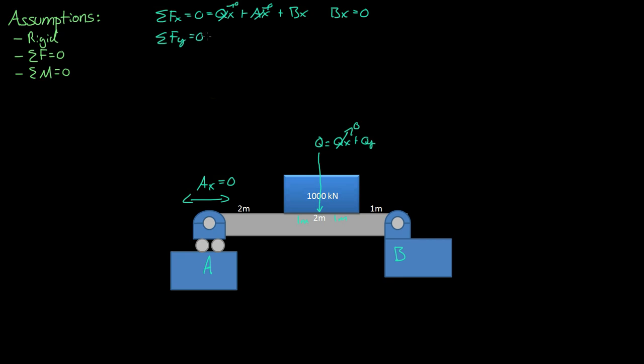Now let's do the summation of forces in the y direction, which must also equal zero. So ΣFy equals 0. We have Qy, which is 1000 kilonewtons (Q equals Qy), plus Ay plus By. That's actually negative, so if we transfer that over, we get 1000 kilonewtons equals Ay plus By.